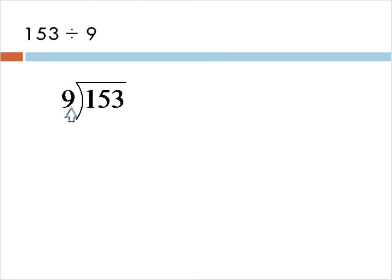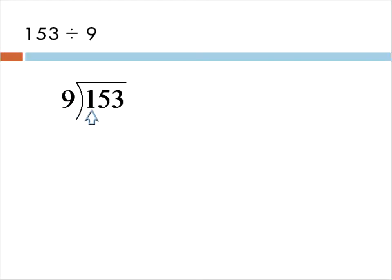Then we look at this outside number, 9 in this case, and we say: how many times does 9 go into — and we'll break 153 apart and just look at it in parts. First we'll look at the hundreds. How many times does 9 go into 1? Well, 9 doesn't go into 1 — 9 is bigger than 1 — so we can't do anything with that. We're going to move on to the next number. How many times does 9 go into 15? That we can do. 9 goes into 15 one time.